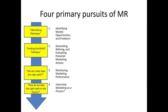Finally, the fourth primary pursuit of marketing research is to improve marketing as a process overall. If we understand and accept that marketing is actually a process — not just an art — the idea is that marketing research, when integrating these first three primary pursuits, can help us improve our ability to conduct marketing in a more rigorous fashion.